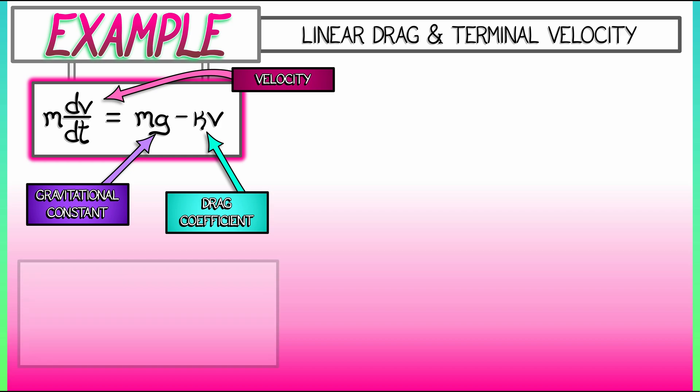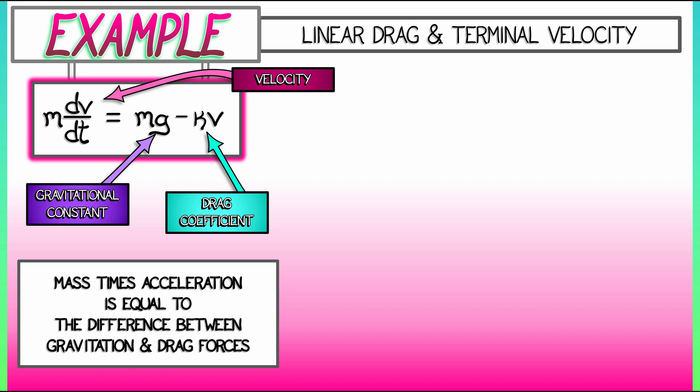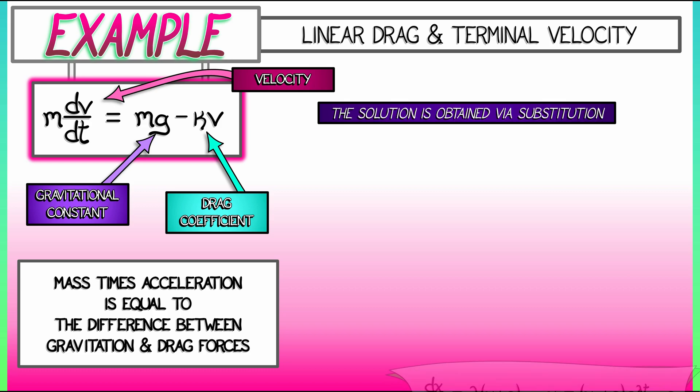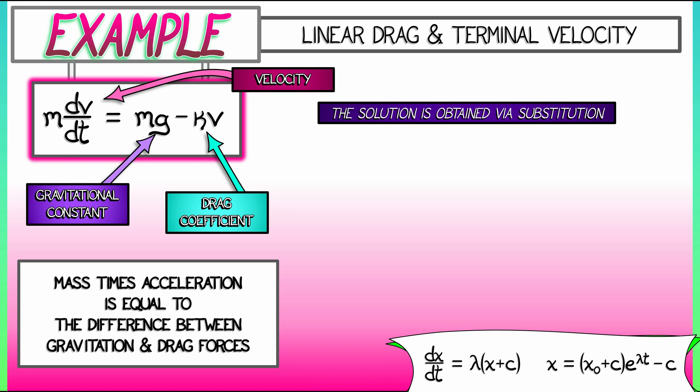Okay, so we've got this differential equation. It says that the mass times dv/dt is equal to the difference between the gravitational and the drag forces. Cool. But notice, this is an affine equation. This is some constant of proportionality times v, and then you've got this other constant, mg. We can pull up the general case and its general solution and start matching up the terms.